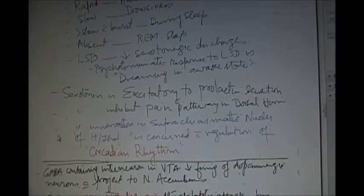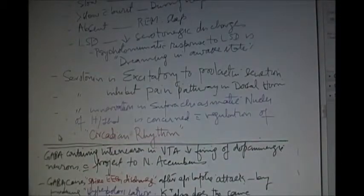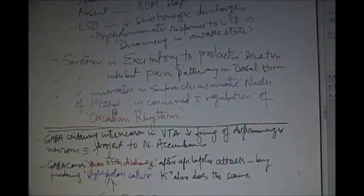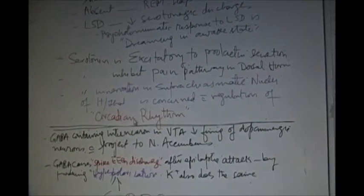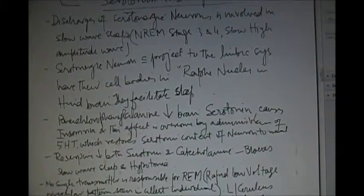Serotonin is excitatory to prolactin secretion. Remember dopamine is inhibitory. Serotonin inhibits the pain pathway in the dorsal horn. Serotonin innervation in suprachiasmatic nuclei of hypothalamus is concerned with the regulation of circadian rhythm.